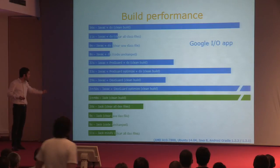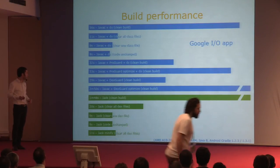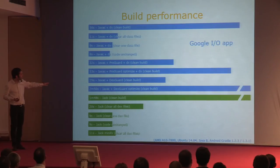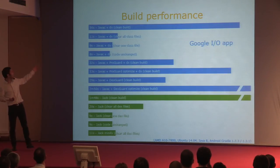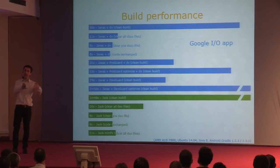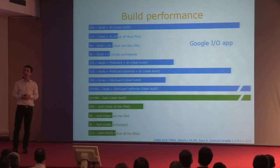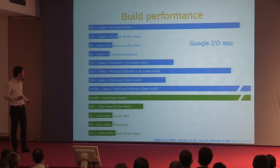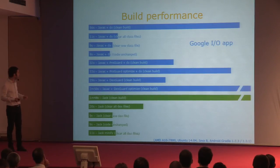Then I've compared that to the Jack and Jill compilers. The clean build takes quite a while—longer than the traditional build. This is because internally it's creating all these cached versions of libraries in the JACE format. If you perform incremental builds, changing one file or a few files, that time goes down quite a bit.